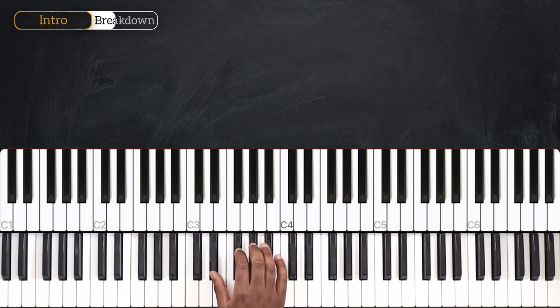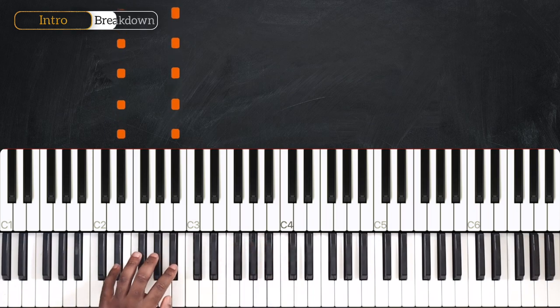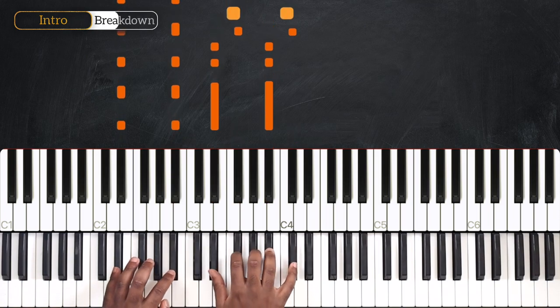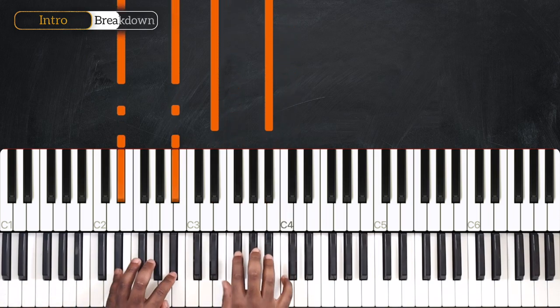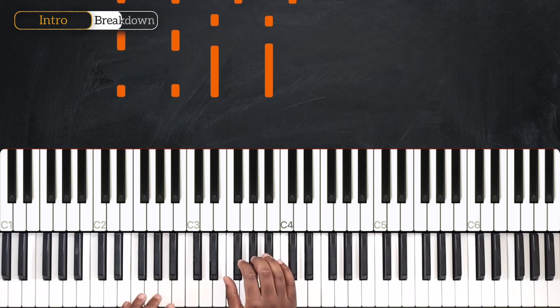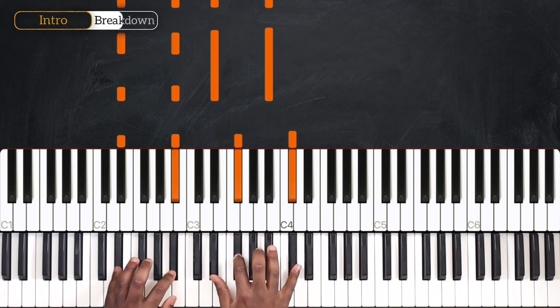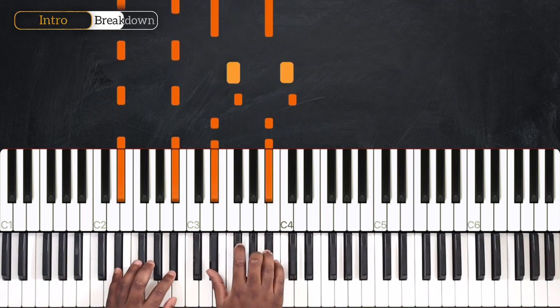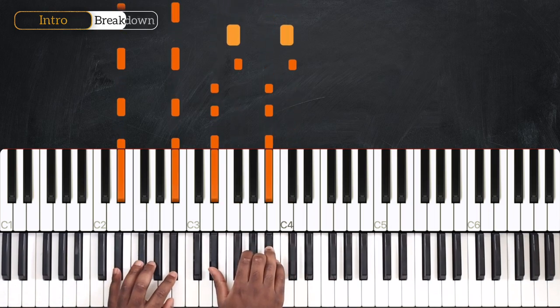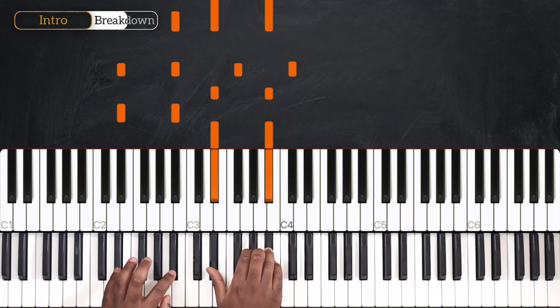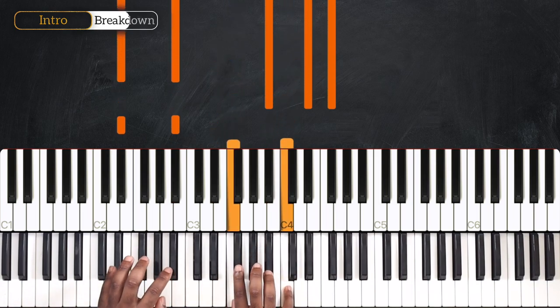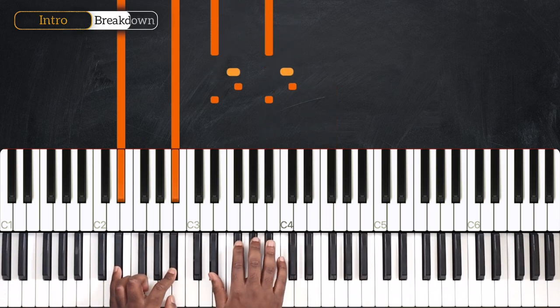So I'm going to do that three times back-to-back, still playing the quarter notes on my left. Slow tempo: one, two, three, four. One, two, and three, four. One, two, three, and four, and one. Two, and three, four. One, two, three, and four, and one. Two, and three, four. One, two, three, and four, and one. So we're going to do that pattern three times.